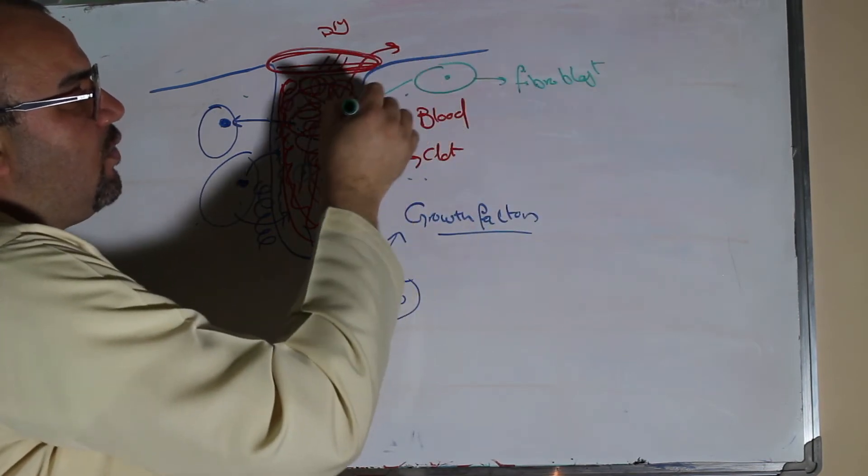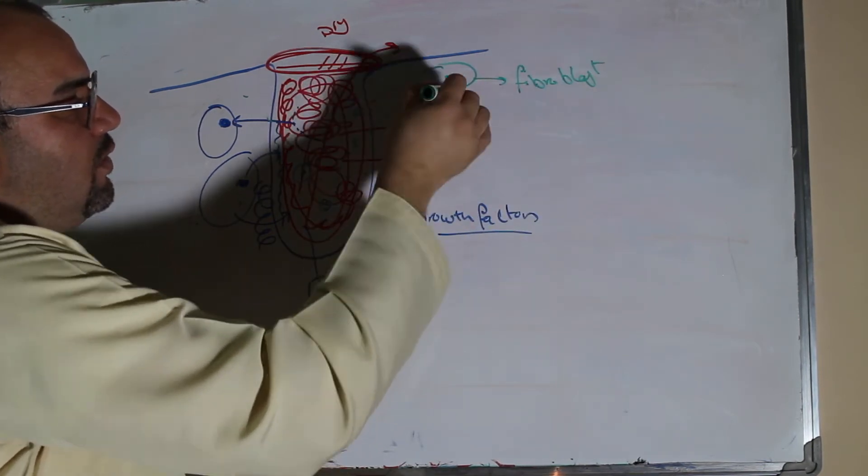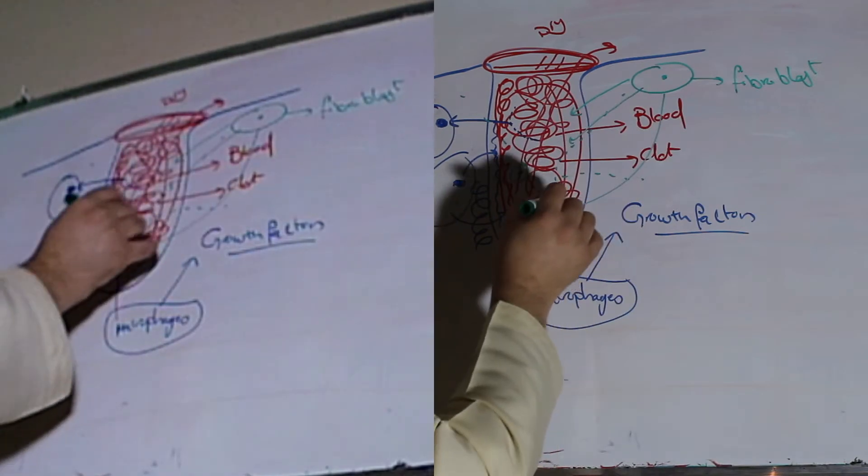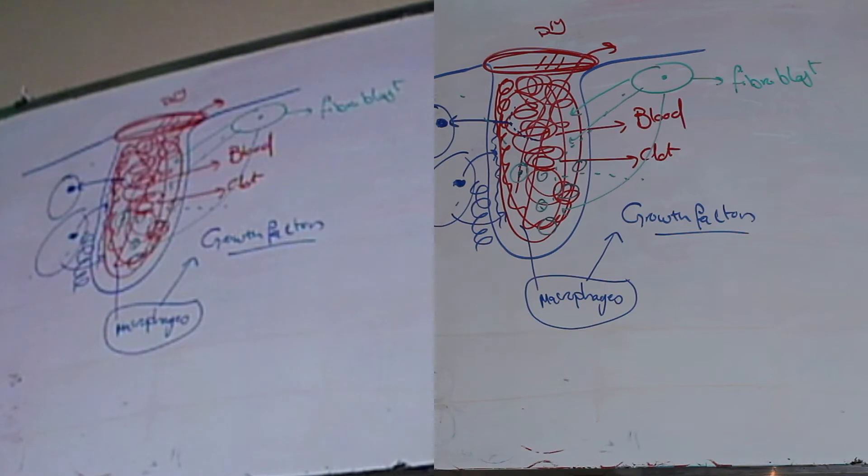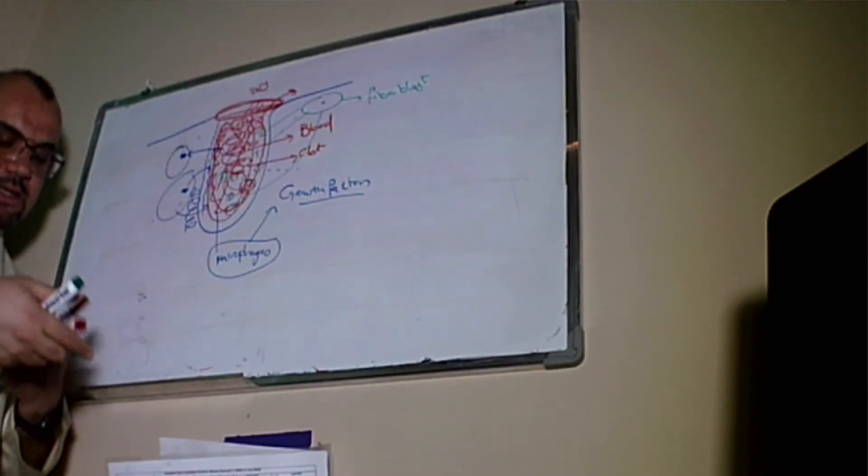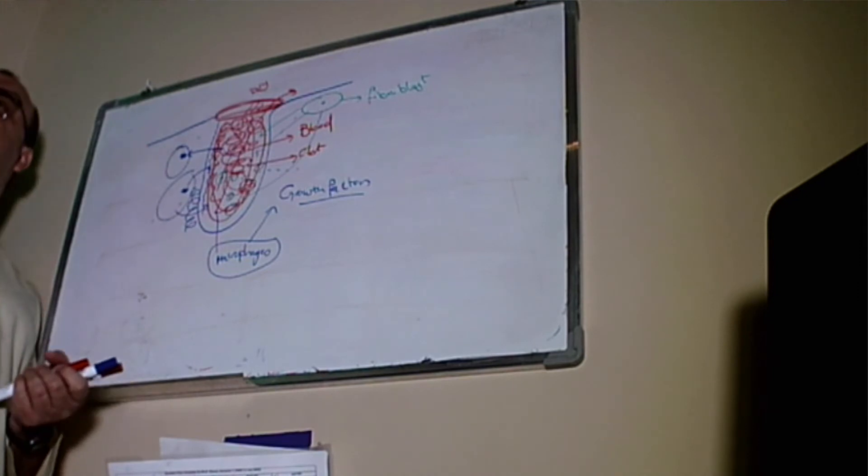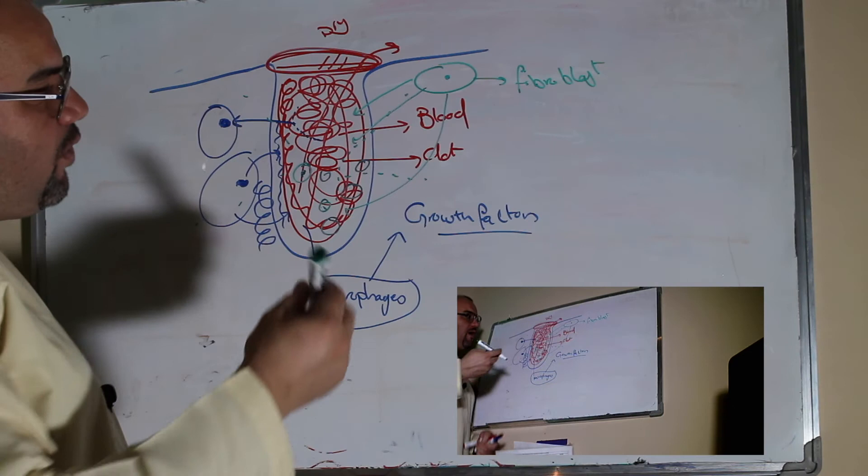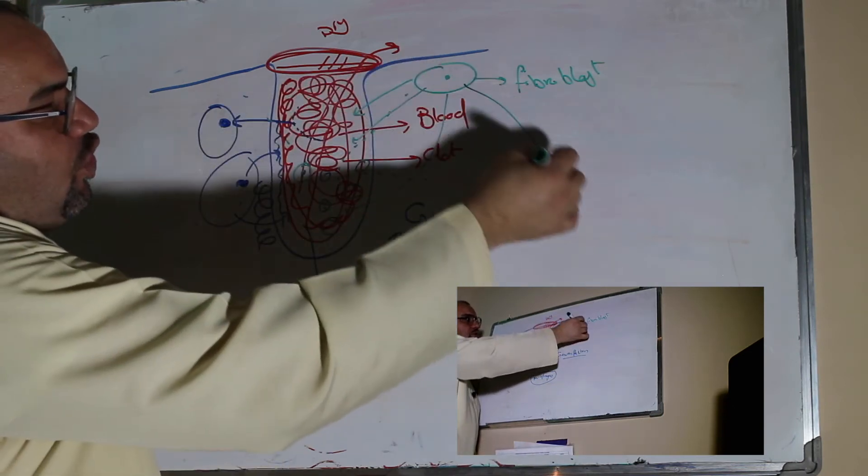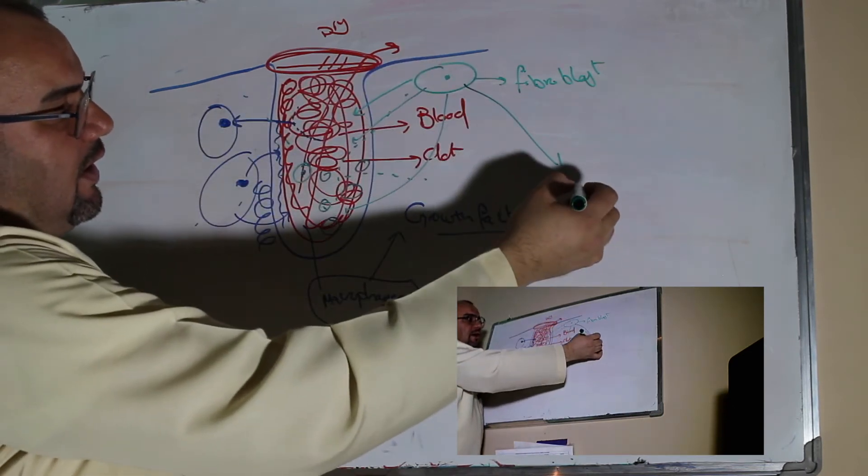It will start to come here to the wound and start to produce a kind of tension or a kind of making the wounds going for closing by producing the connective tissue. And these fibroblasts will produce collagen.